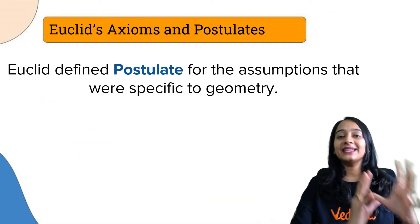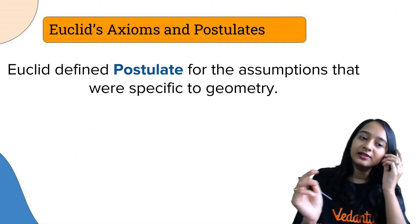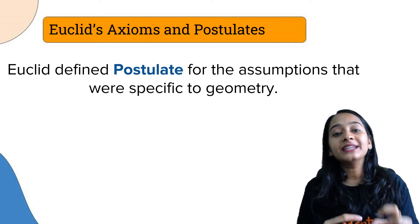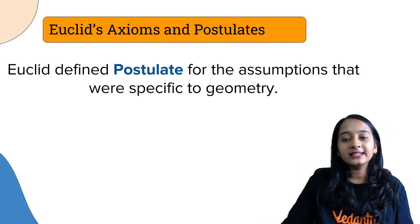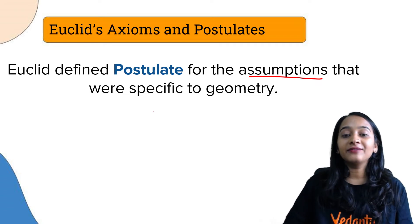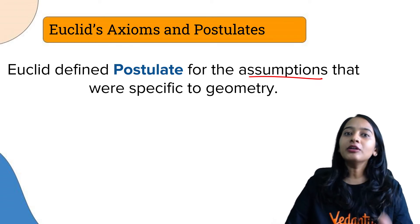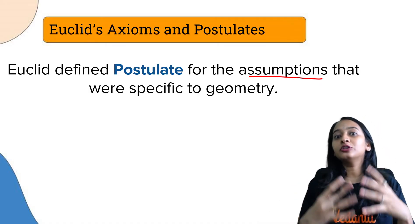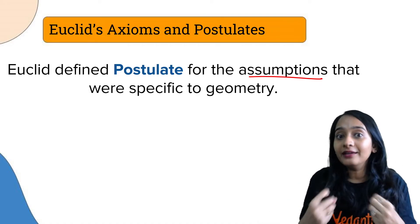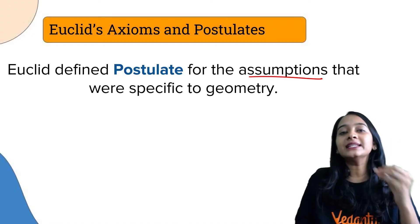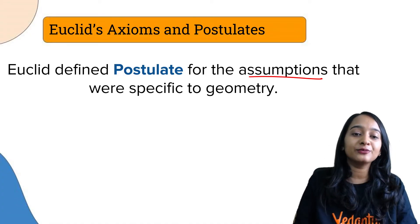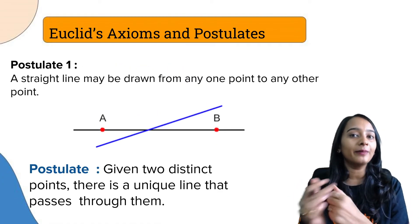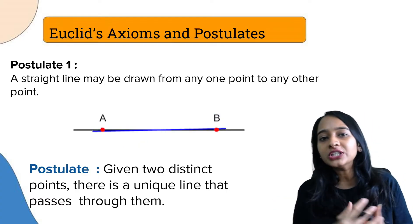Euclid defined postulates for assumptions that were very specific to geometry. The axioms we discussed were not very specific to geometry - they were applicable to real life. But postulates are those assumptions that are very specific to geometry.